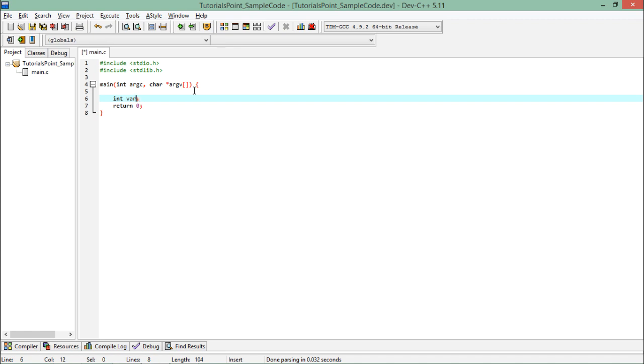Using semicolon you can terminate any particular statement. Along with that, if you want to initialize it with any particular value, you can also assign any integer value. As integer will store only non-decimal numbers, I'll make sure I'm not passing any decimal numbers. But if there is a double or float type variable, then I can also pass any decimal value like this.